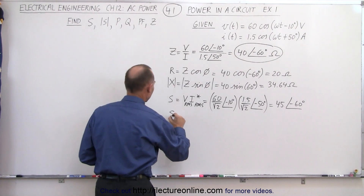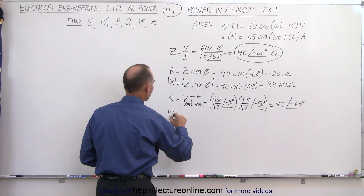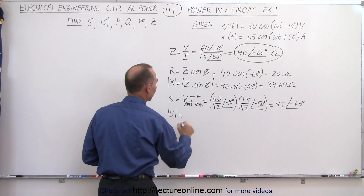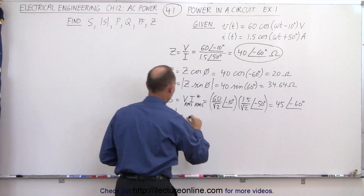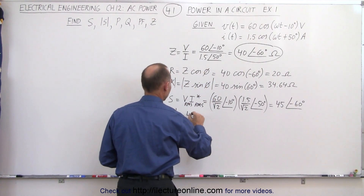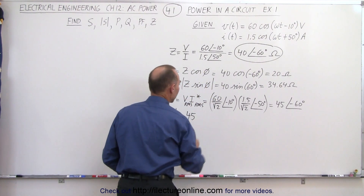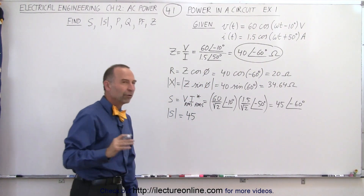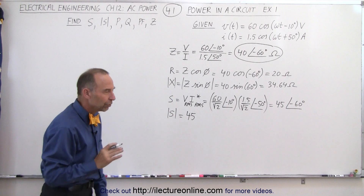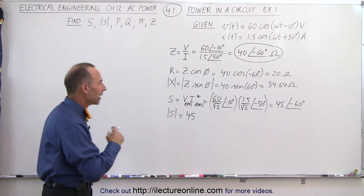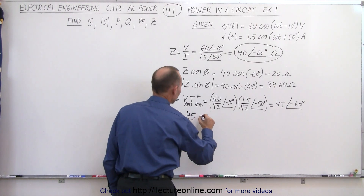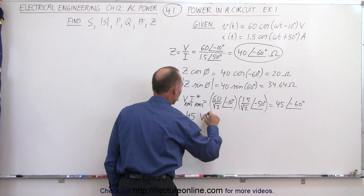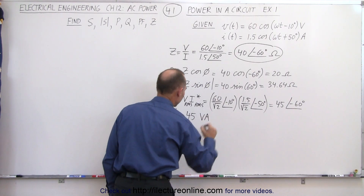If we want to find the magnitude of S, that is simply 45. The magnitude of S is the apparent power, which has units of volt amperes.